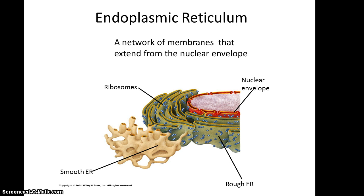The endoplasmic reticulum is a network of membranes that extend from the nuclear envelope. There are two main types of endoplasmic reticulum. You have rough endoplasmic reticulum, which has ribosomes associated with it, and it's these ribosomes that give it its rough appearance. And then you have the smooth endoplasmic reticulum, which obviously lacks ribosomes.